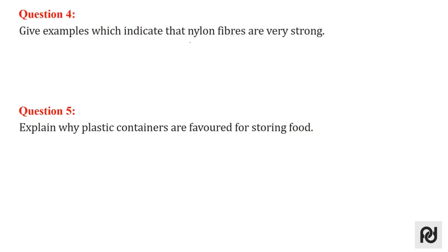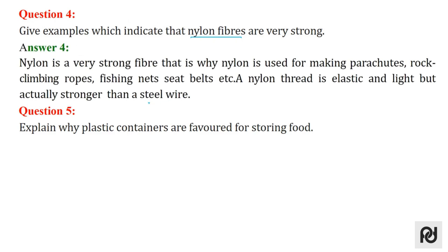Question 4 is: give examples which indicate that nylon fibres are very strong. Nylon is very strong and elastic in nature — it is actually stronger than a steel wire. It is used for making parachutes, rock climbing ropes, fishing nets, seat belts, etc. A nylon fibre thread is elastic and light but very very strong.